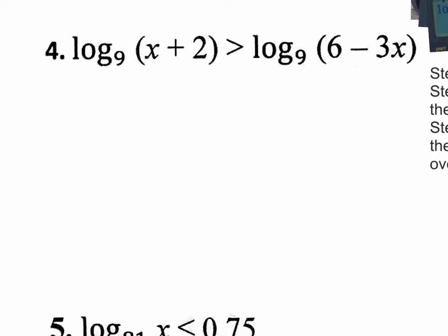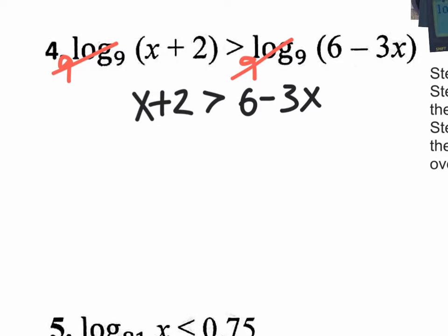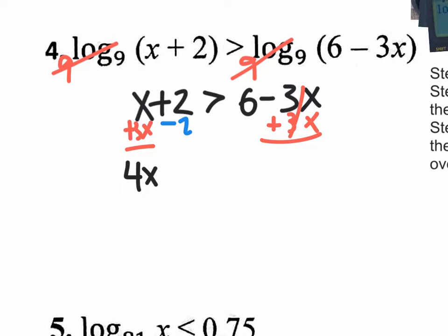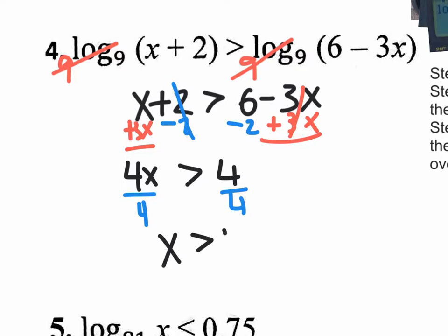Step 1: let's solve. Get rid of log base 9 by making it a power of base 9 — that will cancel out. We have a new inequality: x plus 2 is greater than 6 minus 3x. Move the x's to the left by adding 3x, then subtract 2. We get 4x is greater than 4. Dividing by 4, the answer is x is greater than 1.